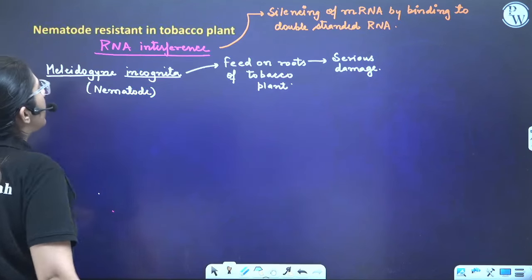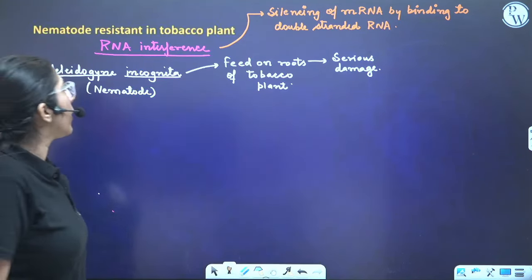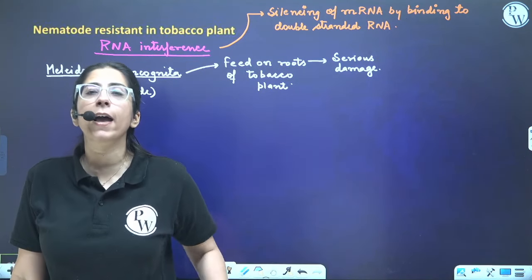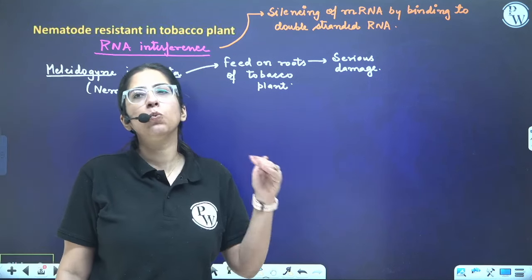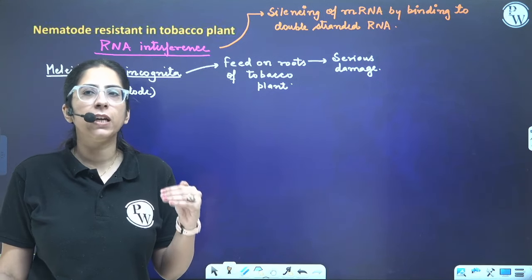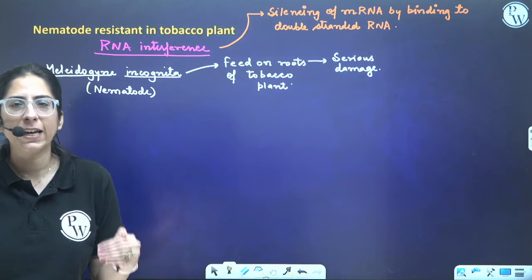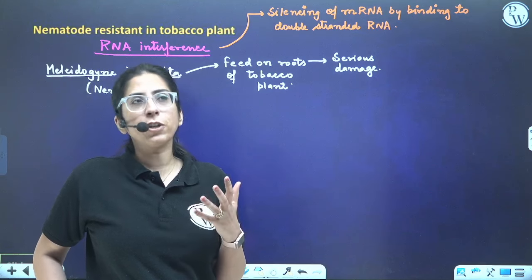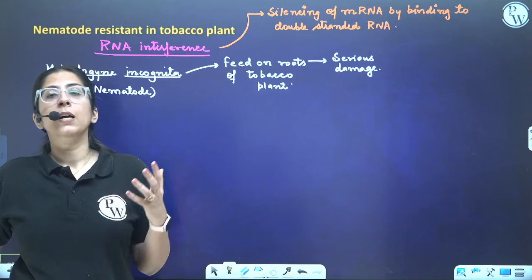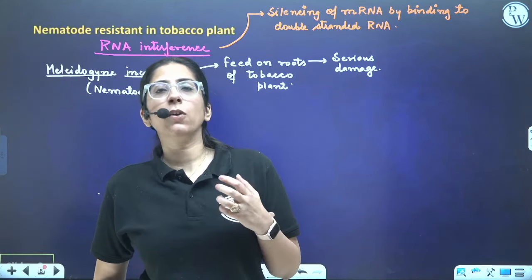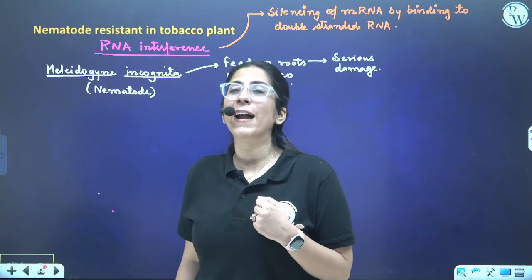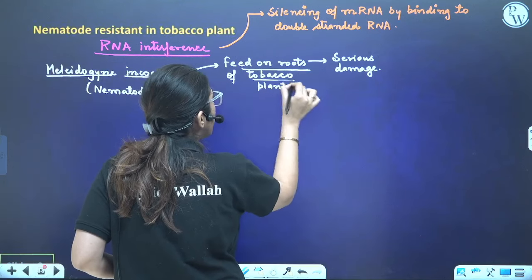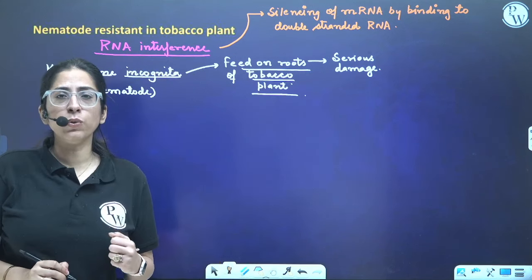Another example from NCERT is the nematode-resistant tobacco plant. The technique used was RNA interference. RNA interference means silencing of mRNA by binding to it with a double-stranded RNA. A tobacco farmer observed that the crop was badly damaged by a nematode called Meloidogyne incognita, which feeds on the roots of tobacco plants and can cause serious damage. The technique used was RNA interference.